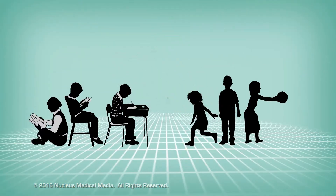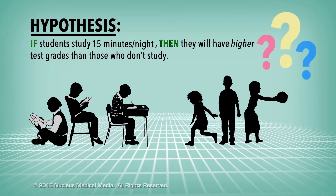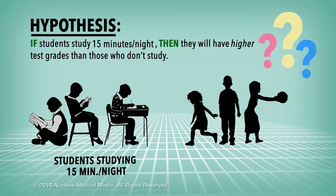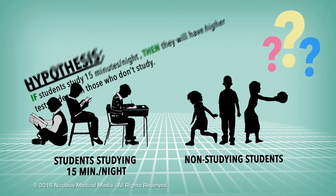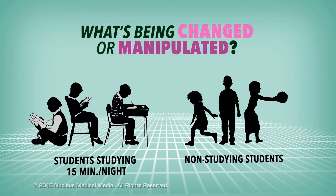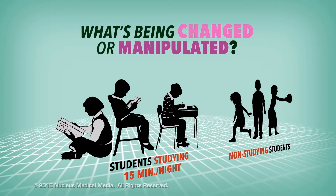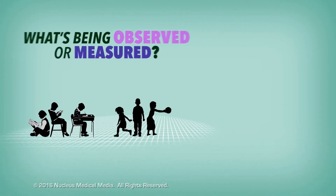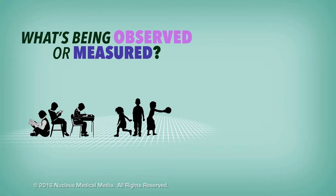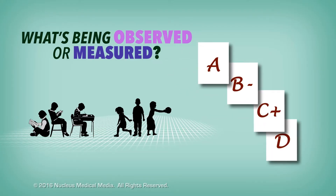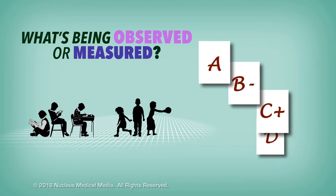Let's look at a few examples. Suppose your hypothesis is that if students study 15 minutes a night, then they will have higher test grades than those who don't study at all. What's being changed or manipulated? It's whether or not the students study for 15 minutes. And what's going to be observed or measured in this experiment? What do you think might be different as a result of this increased study time?